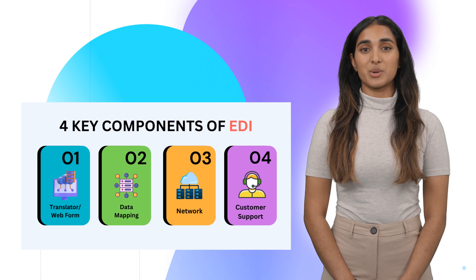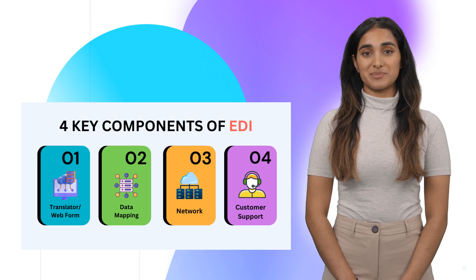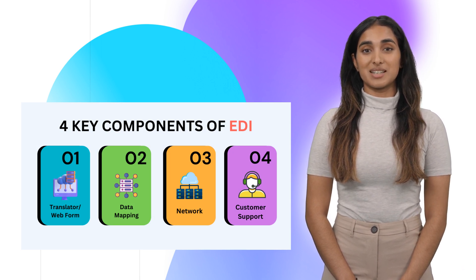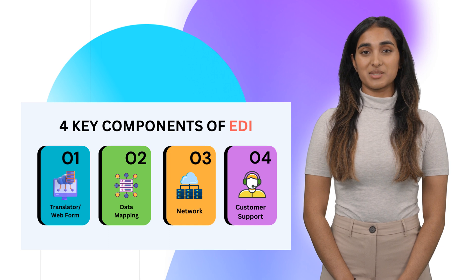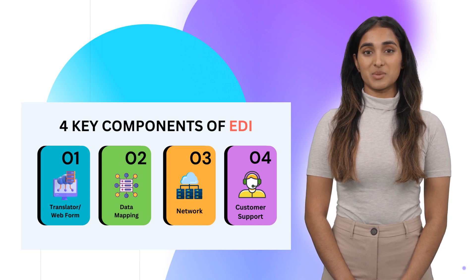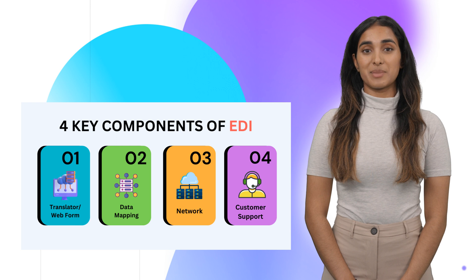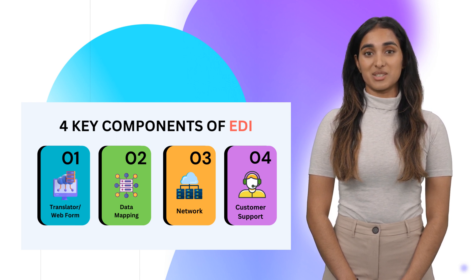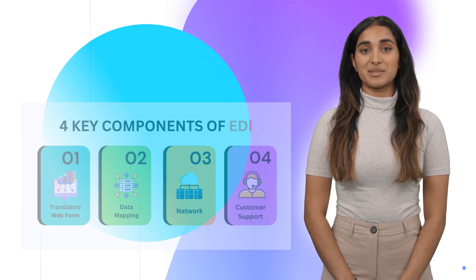The EDI system comprises four components. Standardized data formats ensure consistency in data exchange, while software facilitates the transmission of data between trading partners. Message translation ensures compatibility between different systems, and secure communication channels protect sensitive information.